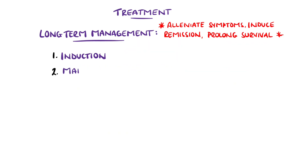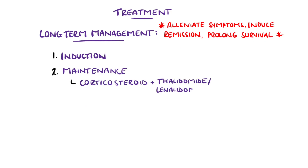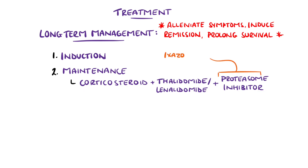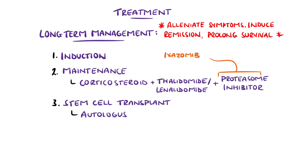Maintenance therapy is usually corticosteroids with thalidomide or lenalidomide and a proteasome inhibitor, particularly ixazomib, which is an oral medication. Results from the non-chemotherapeutic agents may even be preferable to transplant, which are generally autologous stem cell transplants, where the stem cells come from the patient themselves.